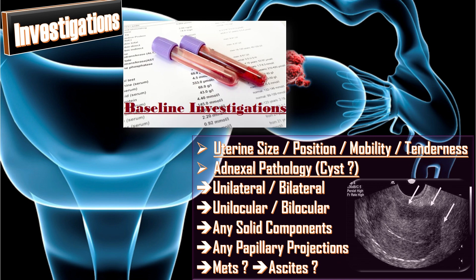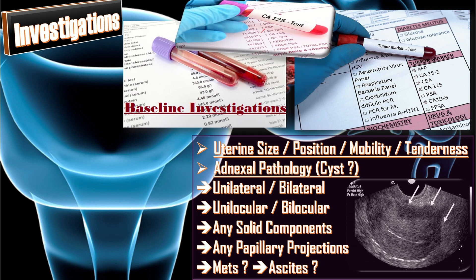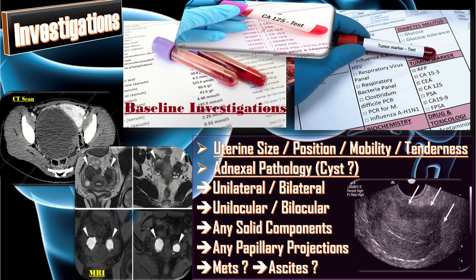We also check whether there are metastases to any other part of the body and whether ascites is present. If features of complex cysts are found on ultrasound, we do tumor markers. In this postmenopausal lady, we will do CA-125 and calculate the RMI score. If the RMI score is high — more than 200 — we do CT scan or MRI for proper staging of the ovarian cancer.